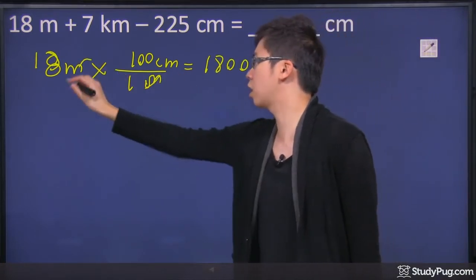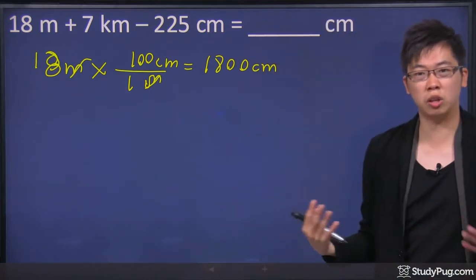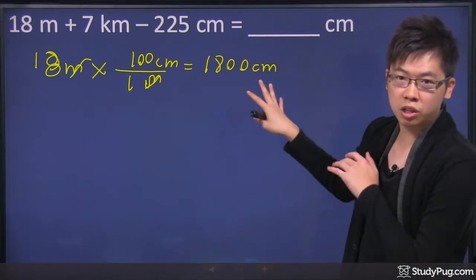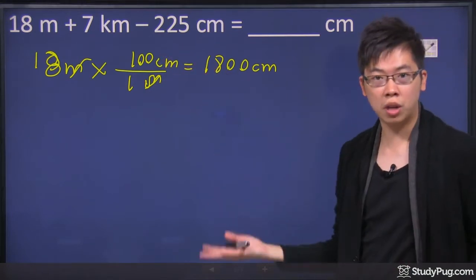Okay, the units should get canceled out. So that's kind of checking your work at the same time. So once that is done, that's fine. You go to the next one, which is 7 kilometers.